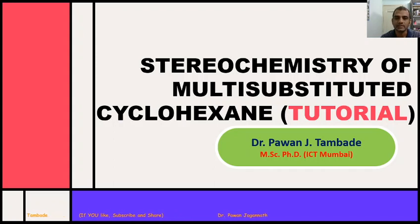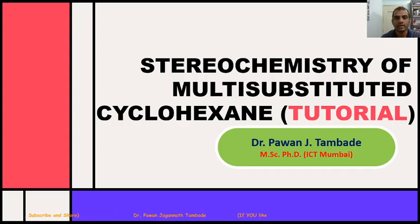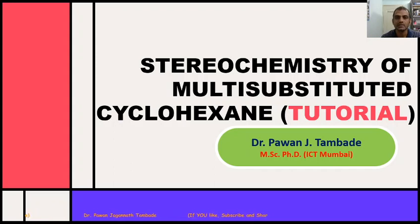Dear friends, in last video lectures we saw stereochemistry of mono-substituted cyclohexane. Now we will see if more than one substituent is present on cyclohexane, then how that cyclohexane molecule behaves. We will try to find out the cis and trans isomerism in such cases and how we can assign relative positions to groups in cyclohexane.